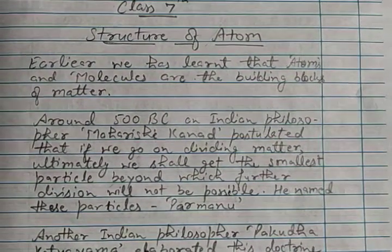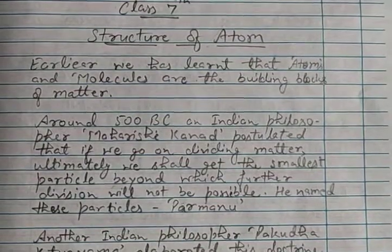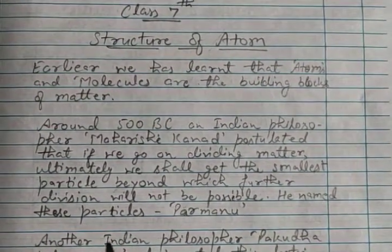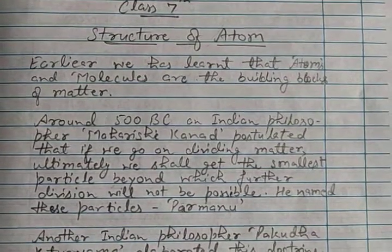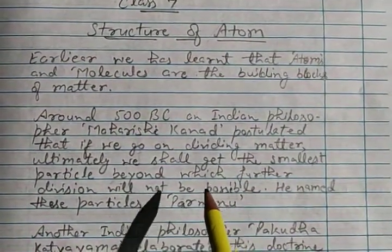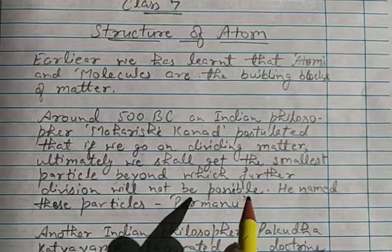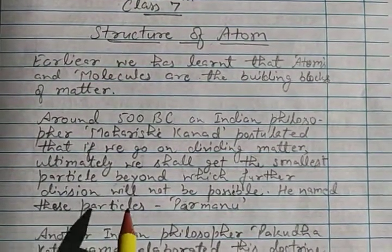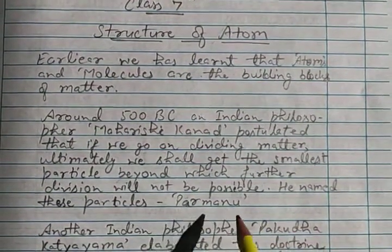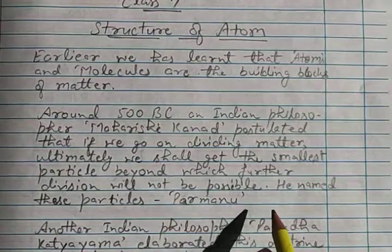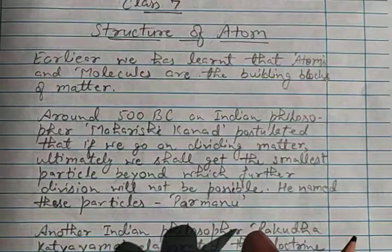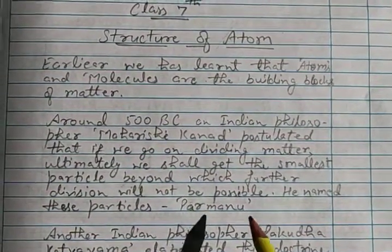For example, can we see the particles of air? No. Even the particles of air — the molecules of gases — we cannot see them. We will get to such a small position that we cannot see them. He named these particles as 'parmanu.' Parmanu is made up of two words: 'param' and 'anu.' Param means very small — something very extreme.